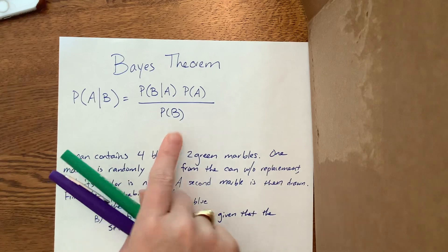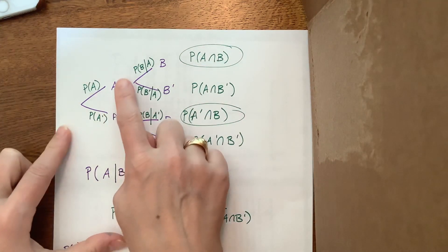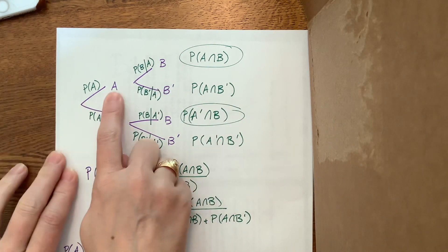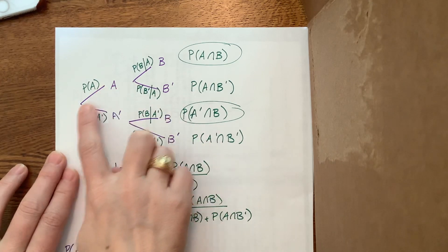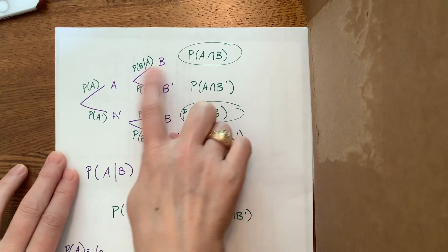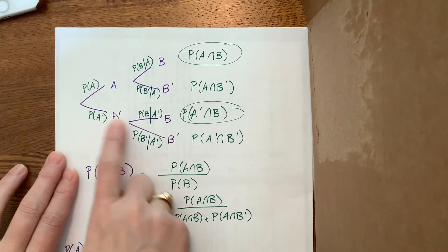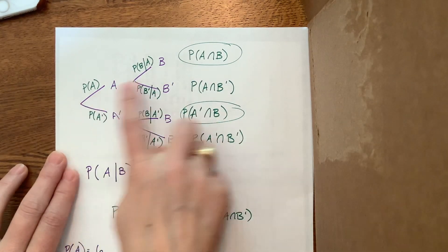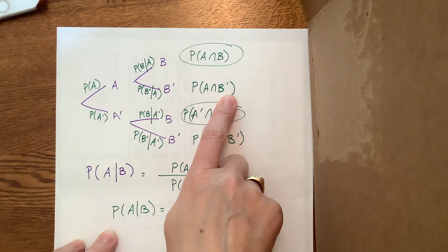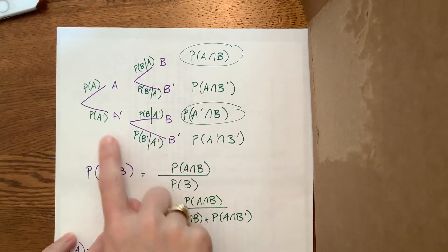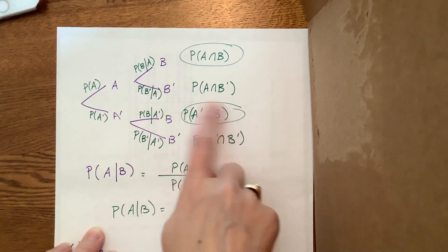In a previous video, we were making this tree diagram. We had A and not A on the first branch, and then B and not B for each. This branch is the probability of B given A, this one is the probability of not B given A, this is the probability of B given not A, and this is the probability of not B given not A. At the end of each branch, you multiply to get the intersection: probability of A intersect B, probability of A intersect not B, probability of not A intersect B, and so on.